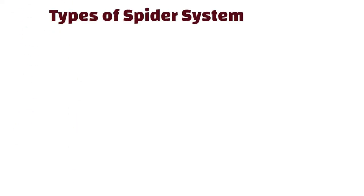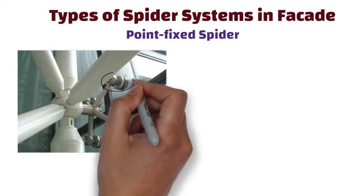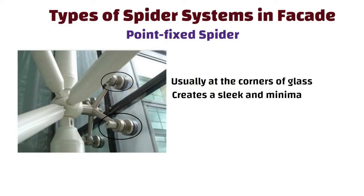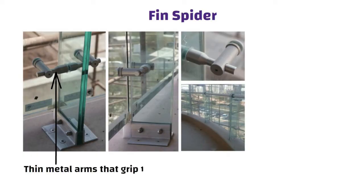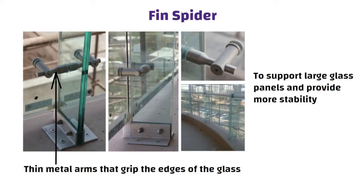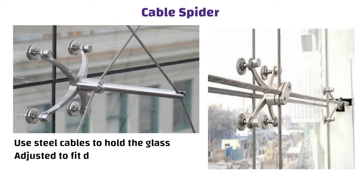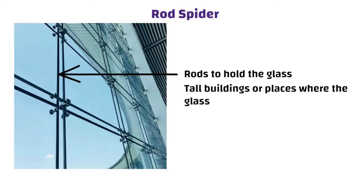Point fix spider: this type uses small metal points or bolts to hold the glass in place at specific points, usually at the corners, creating a sleek and minimalistic appearance. Fin spider: fin spiders are like long thin metal arms that grip the edges of the glass, often used to support large glass panels and provide more stability. Cable spider: cable spiders use steel cables to hold the glass and can be adjusted to fit different angles and shapes, making them versatile for unique architectural designs. Rod spider: rod spiders use metal rods to hold the glass and are often used for tall buildings or places where the glass needs extra support.